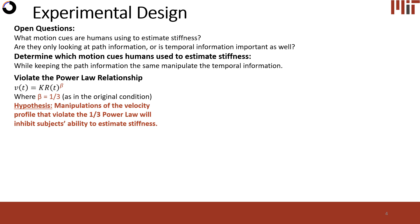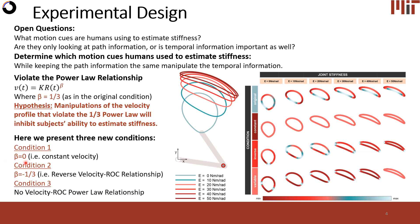In the original condition, the velocity profile followed the one-third power law relation, where you move faster along the straight edges and slower around the curves. In my three new conditions: the first is a constant velocity, where the arm moves constantly around the elliptical trajectory regardless of curvature; the second has a reverse velocity-radius-of-curvature relationship, moving slower along straight edges and faster around curves; and the third has no specific velocity-radius-of-curvature relationship.